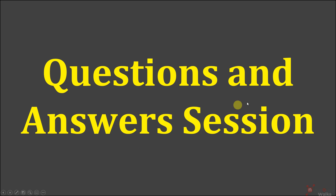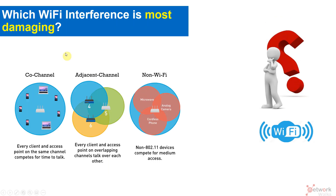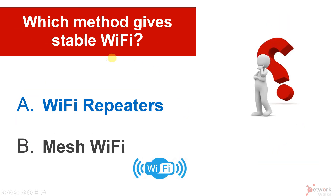Now it's questions time. Which Wi-Fi interference is the most damaging — is it co-channel, adjacent channel, or non-Wi-Fi? We discussed this in the previous series, so please answer in the comment section below. Also, another question: which method gives more stable Wi-Fi — Wi-Fi repeaters or mesh Wi-Fi networks? Please put your answers in the comments, and let me know if you want me to make any other video on any topic related to Wi-Fi and wireless.